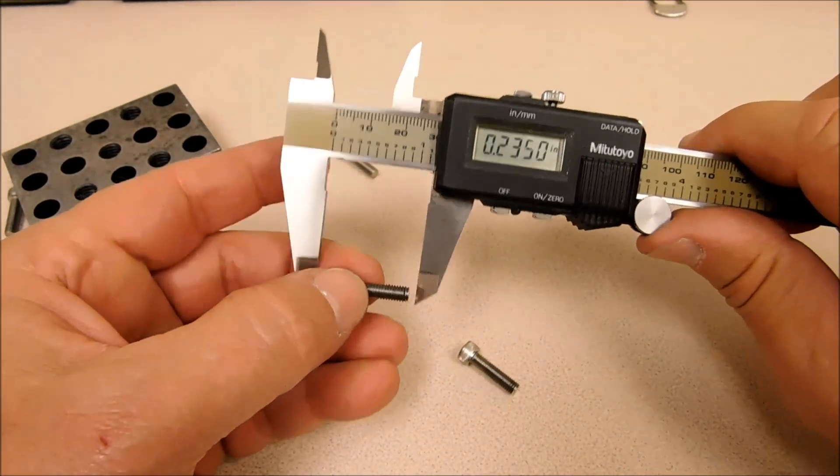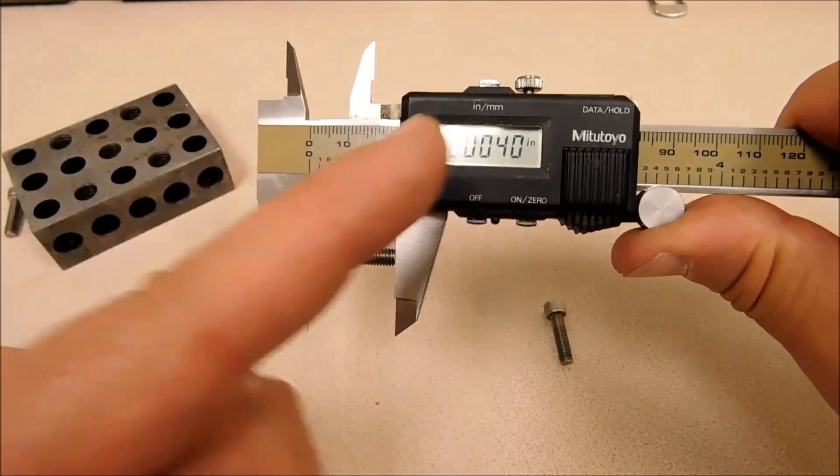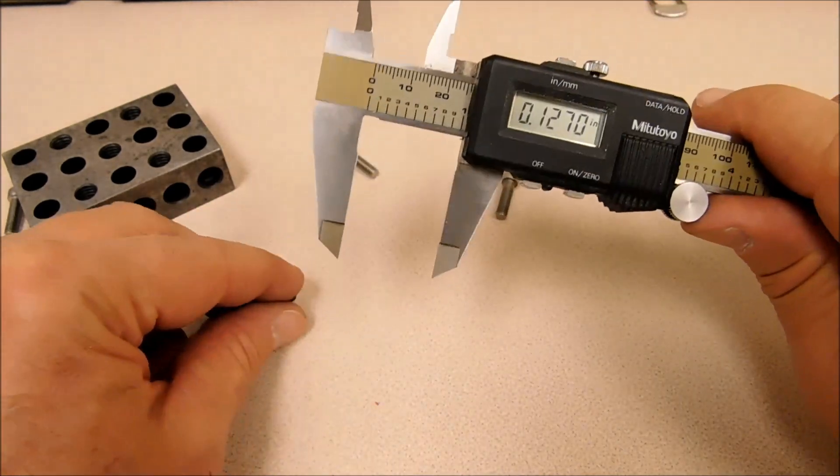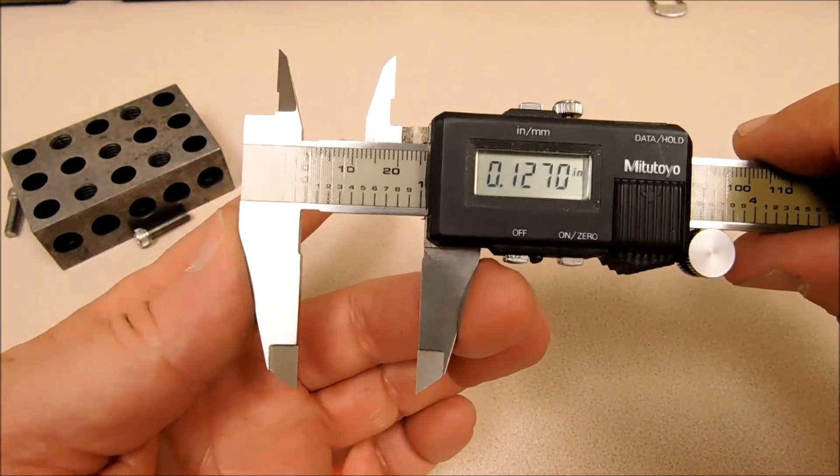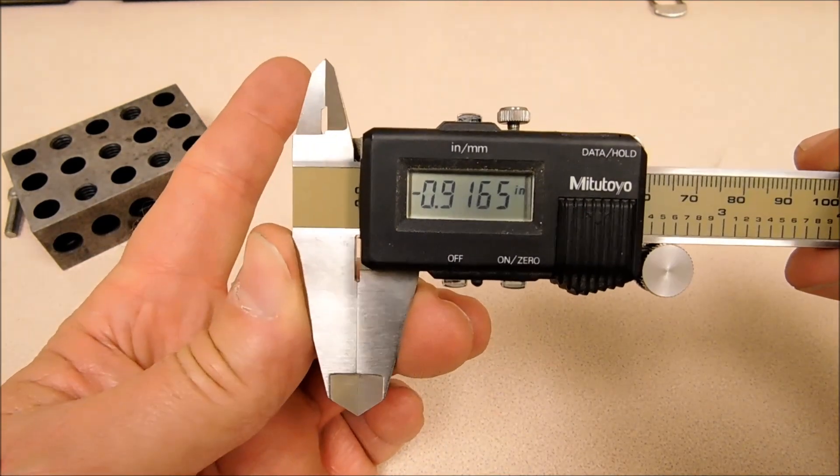Once you do that, and if you want to go back and check what the standard is, close it. When you close it, it'll tell you what it was zeroed out at.